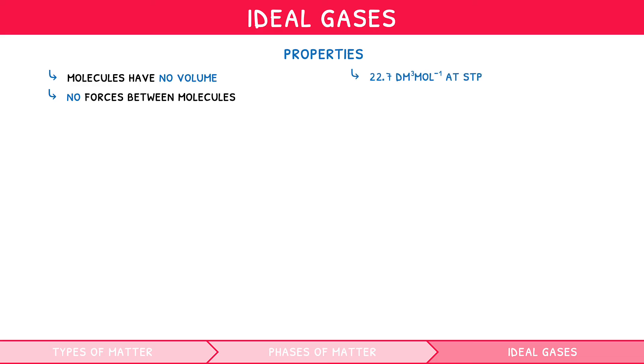In the IB chemistry syllabus, you will also learn about a concept known as ideal gases. This is where gases are regarded as containing molecules with no volume, and with no forces between these molecules. This means the volume of an ideal gas at any given temperature and pressure depends purely on the number of particles present, not the nature or the properties of the gas or particles themselves. From this, it was determined that ideal gas will always occupy a volume of 22.7 decimeters cubed per mole at STP, which is 273 kelvin and 100 kilopascals.